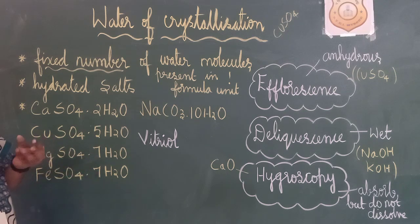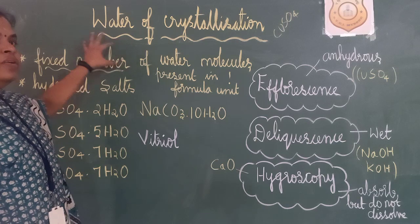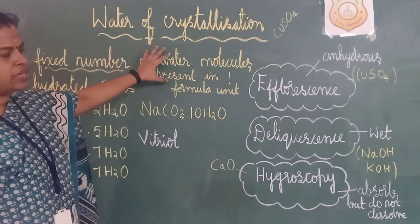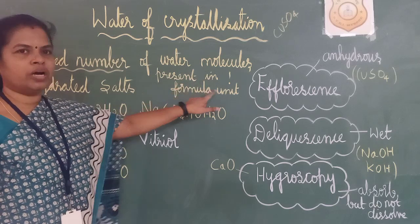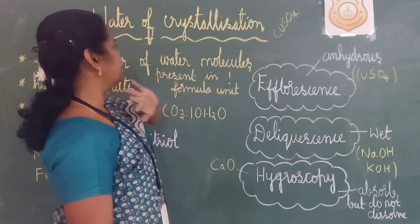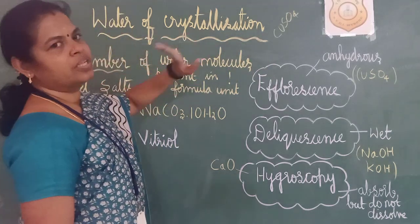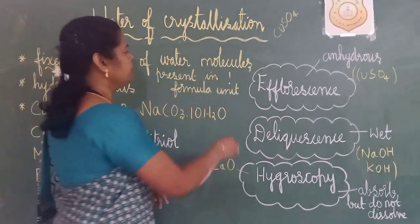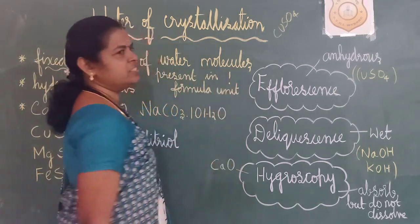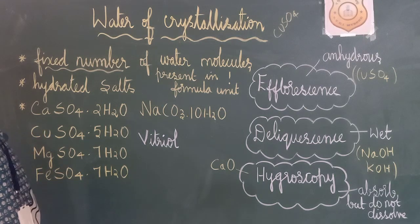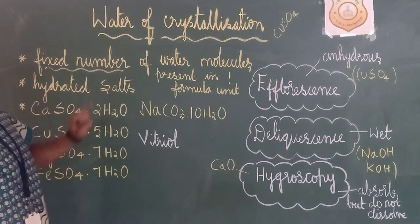For some salts it is 7 — only then I get the structure. This definition tells that the fixed number of water molecules present in 1 formula unit — how many molecules of water are present in 1 formula — that tells us it is water of crystallization. Fixed number of water molecules present in 1 formula unit is called water of crystallization.